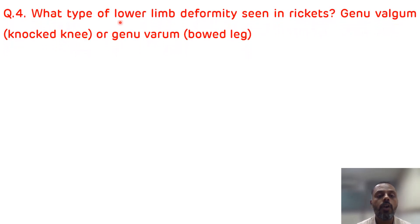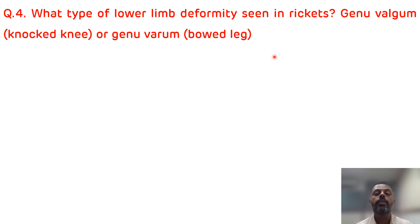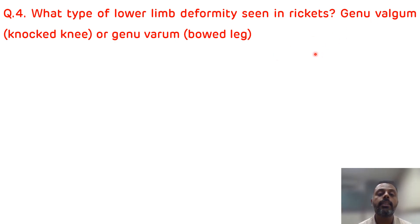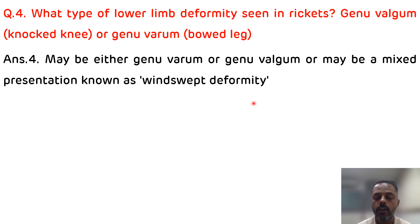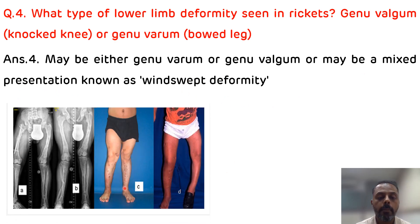The fourth question is: what type of lower limb deformity is seen in rickets? Genu valgum, known as knock knee, and genu varum, known as bow leg, are both seen in rickets. Knock knee is also known as genu valgum, and bow leg is also known as genu varum. If there is a mixed presentation — one leg genu varum and the other genu valgum — it is known as windswept deformity. This picture shows the windswept deformity, with genu varum on one side and genu valgum on the other.